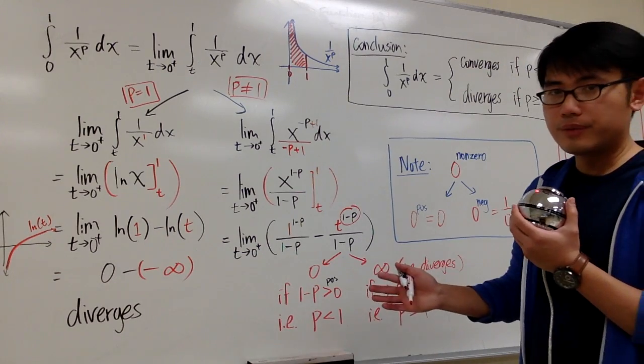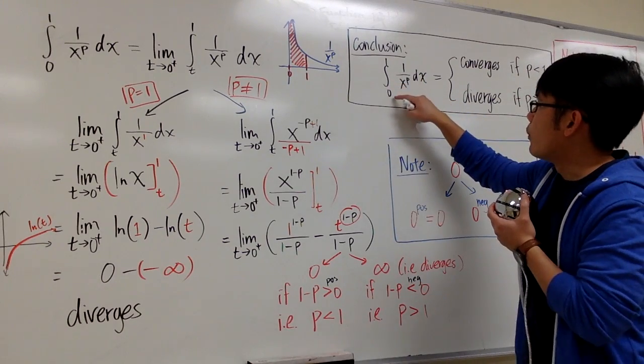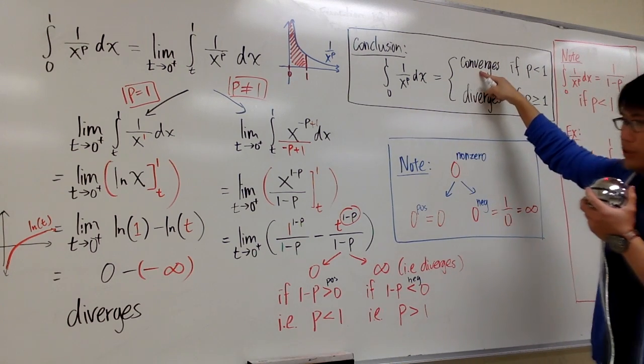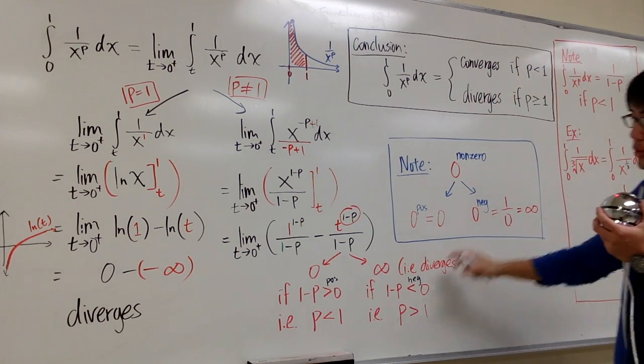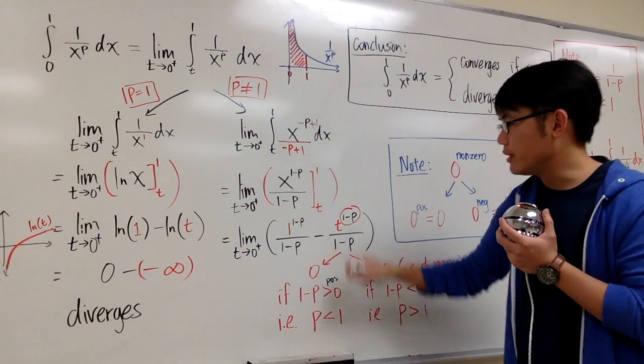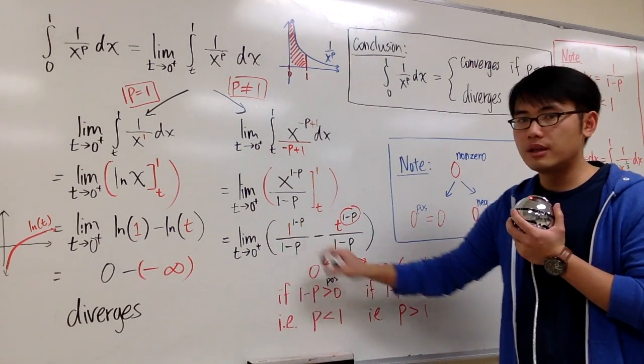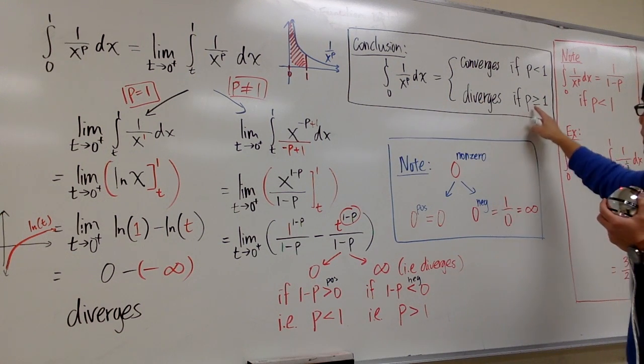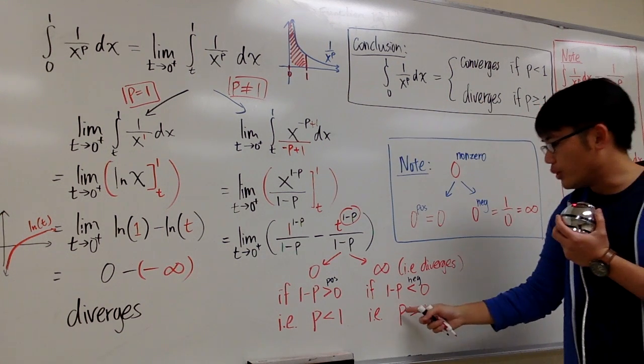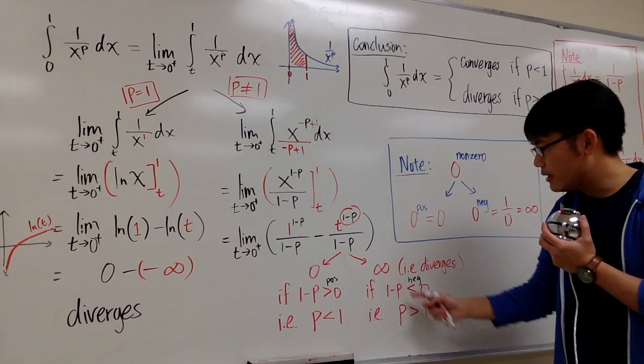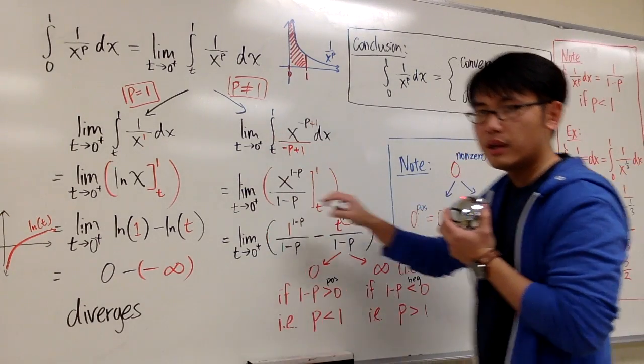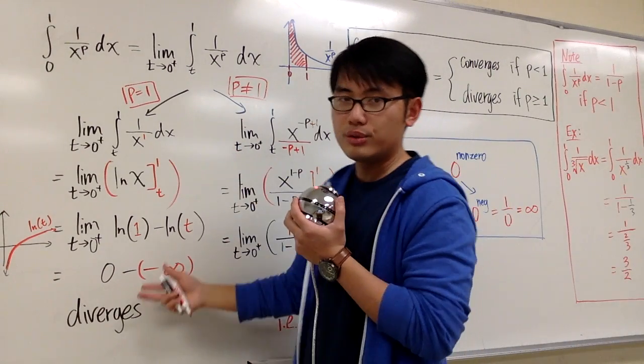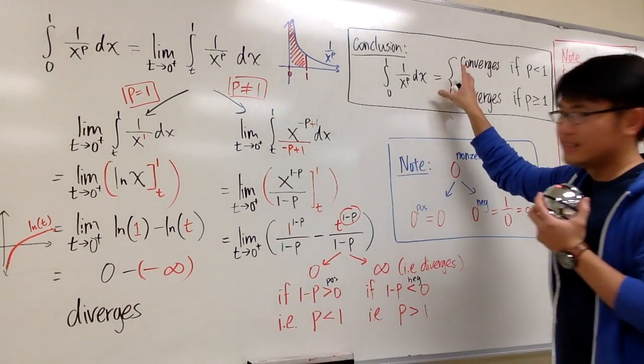So here's the conclusion. The integral from 0 to 1, 1 over x to the p power dx, it converges if we have p is less than 1, which is this situation here. Because if this drops to 0, that will be your answer. And this integral will diverge if p is greater than or equal to 1. I have shown you, if p greater than 1, then we have infinity right here, the whole thing will diverge. And if p is exactly equal to 1, it's the ln situation, it also diverges. That's the conclusion.